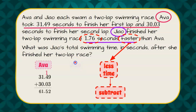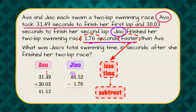So to find Zhao's finish time, we need to take Ava's time and subtract 1.76. We're going to borrow here — cross out the 61 and make it 60. That turns this to 15 because we borrowed the 1. Now we need a 1 for the 2, so we're going to borrow here, turning it to 14, and there's our 12.